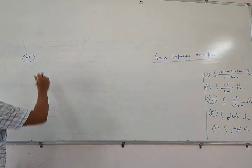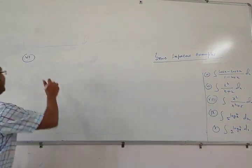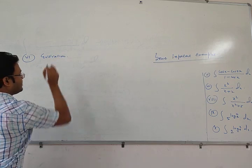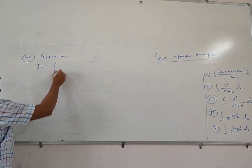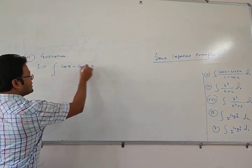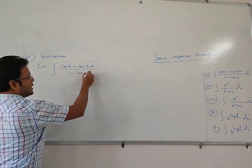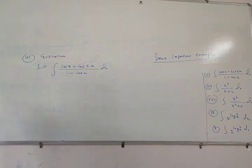Number 6. We have to evaluate this integral. So we have to write evaluation. I equals integration of (cos x - cos 2x)/(1 - cos x) with respect to x.